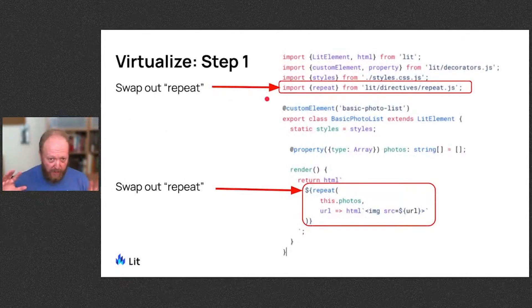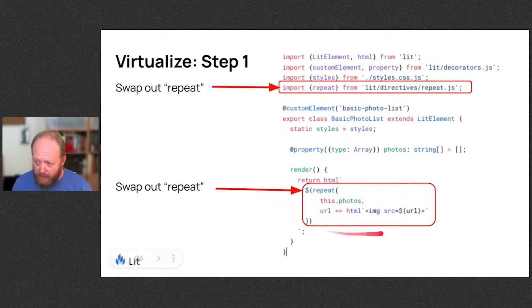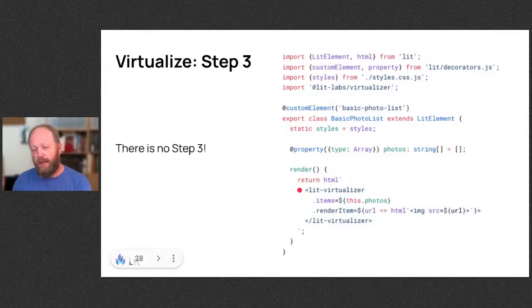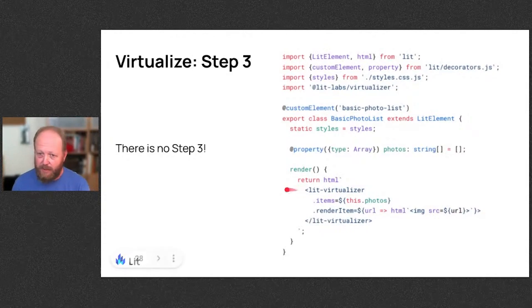To convert your application if you already have large collections, it's a multi-step process. Step one: find out what you're doing to render — you're probably using a repeat. Step two: swap that out and put a virtualizer instead of repeat. And then step three? Actually, that's it. That's all you really have to do. This is going to handle most circumstances where you're rendering a collection of things.